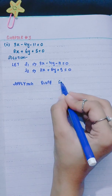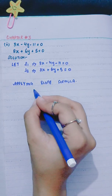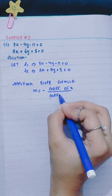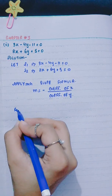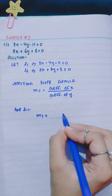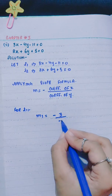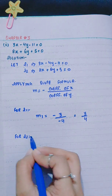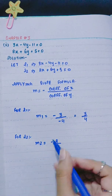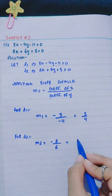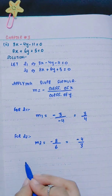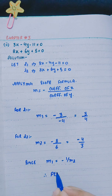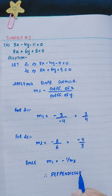Applying the slope formula. For L1, m1 equals minus coefficient of x over coefficient of y, which gives minus 3 over minus 4, so m1 equals 3 over 4. For L2, m2 equals minus coefficient of x over coefficient of y: coefficient of x is 8 and coefficient of y is 6, so m2 equals minus 4 over 3. Since m1 is the negative reciprocal of m2, the lines are perpendicular.